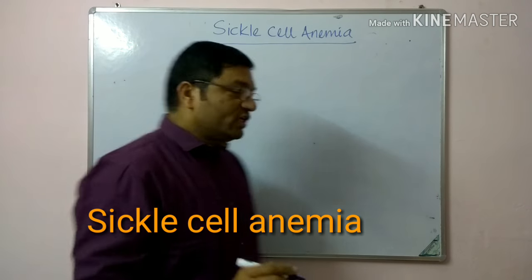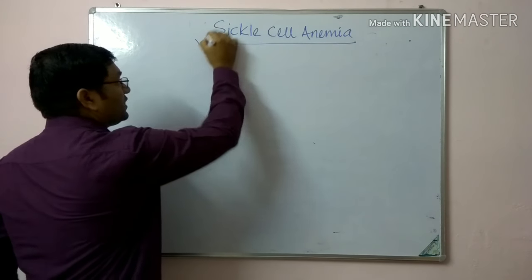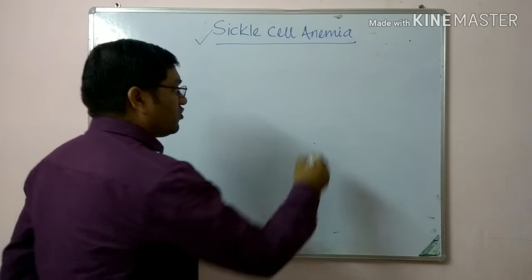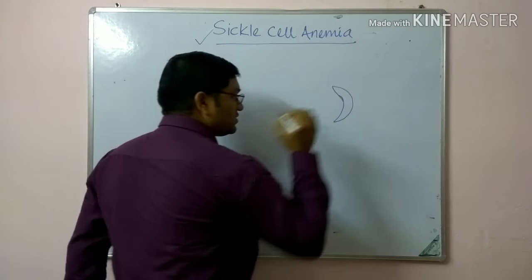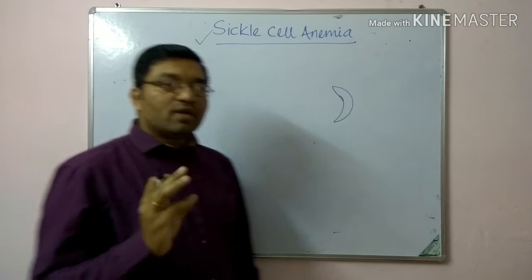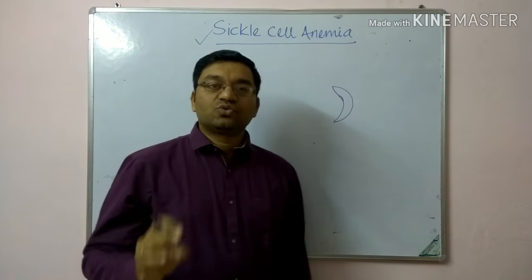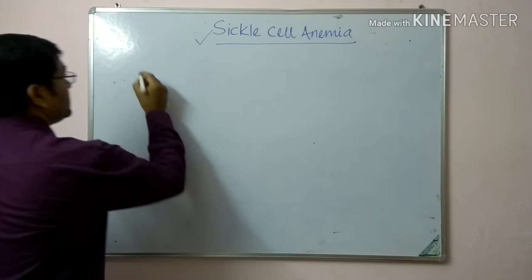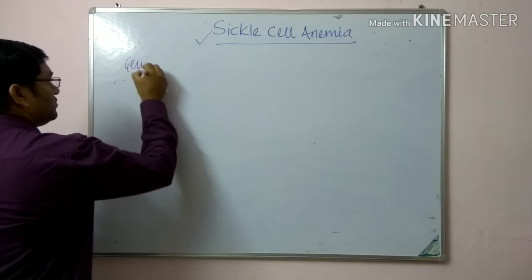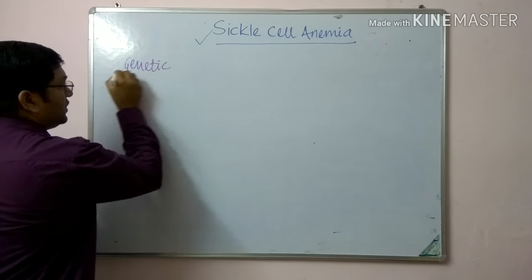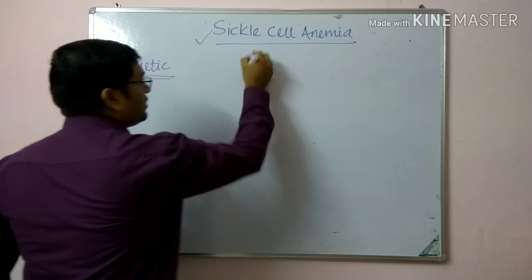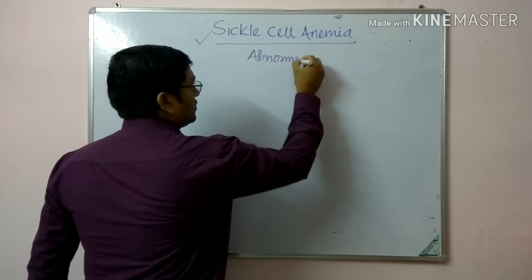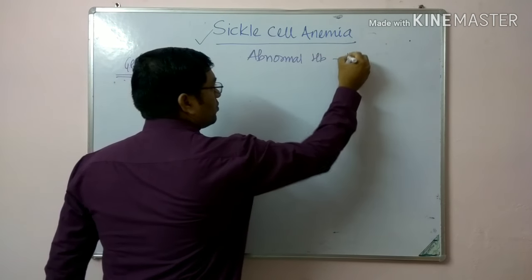Good morning friends. Today we will discuss an important topic — sickle cell anemia. It is named because there is formation of sickle-shaped RBCs which occlude the blood vessels, leading to hemolytic anemia. Coming to the genetic basis, it involves an abnormal hemoglobin — the most common abnormal hemoglobin variant, that is hemoglobin S.